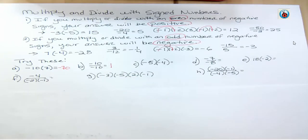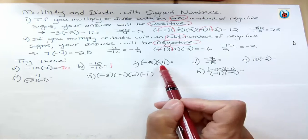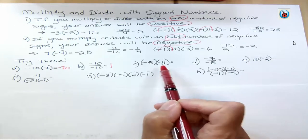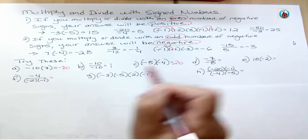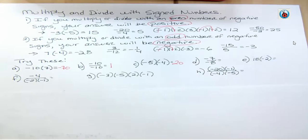The next one, I have two negatives. That's an even number. So I should have positive 20. For the next one, I have two negatives.